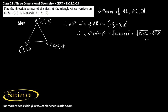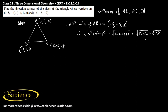Sorry, this is 68, not 98. So that will be square root of 68. We know that 68 is 4 into 17, so we can say that will be 2 root 17.